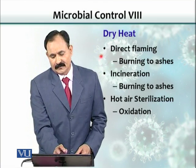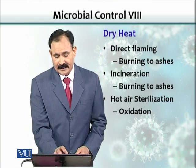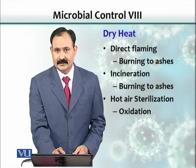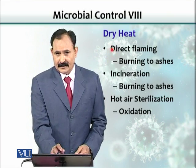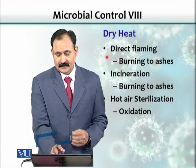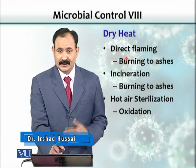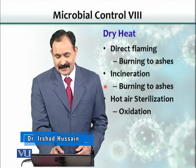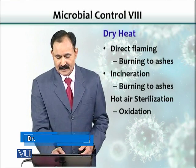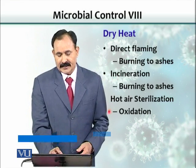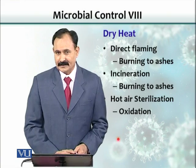Dry heat methods include direct flaming, incineration, and hot air sterilization. With direct flaming, we basically burn the object to ashes — burning takes care of everything. Similarly, incineration involves burning completely. Hot air sterilization works through a different mechanism: oxidation of the objects.